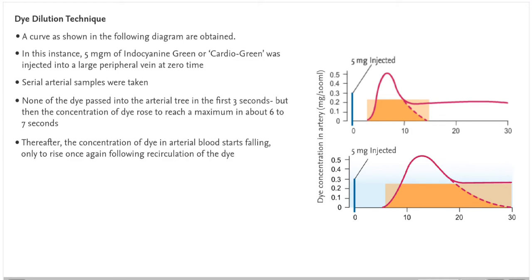Thereafter, the concentration of dye in arterial blood starts falling, only to rise once again following recirculation of the dye.